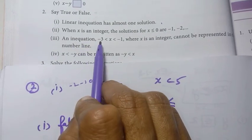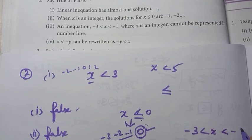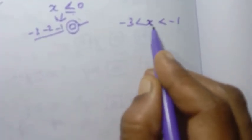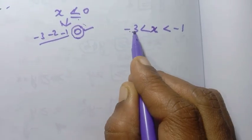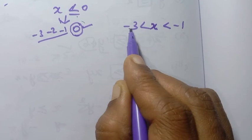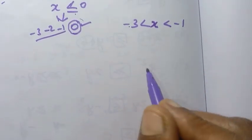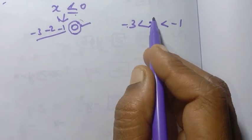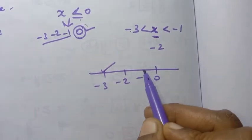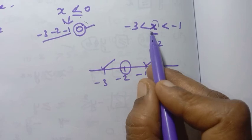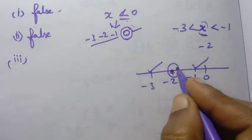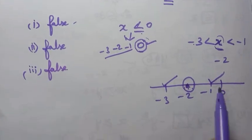Third statement: the inequation minus 3 less than x less than minus 1, where x is an integer, cannot be represented on the number line. On the number line, between minus 3 and minus 1, the integer minus 2 exists. So we can represent minus 2. Therefore, this third statement is false.